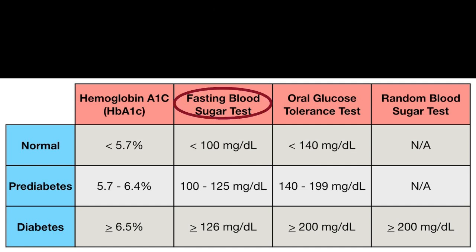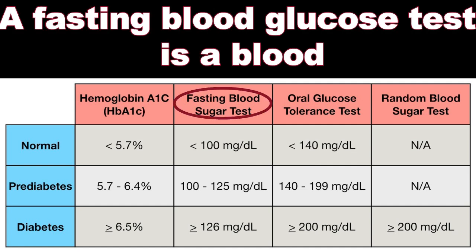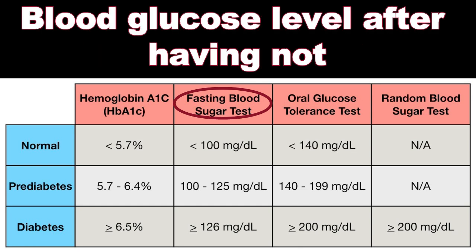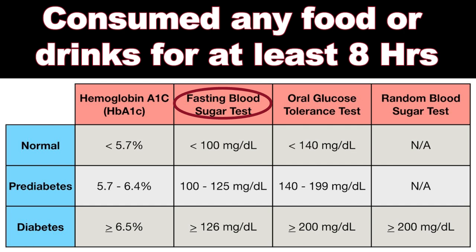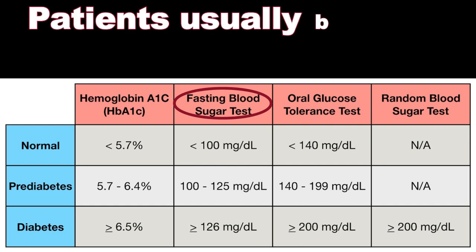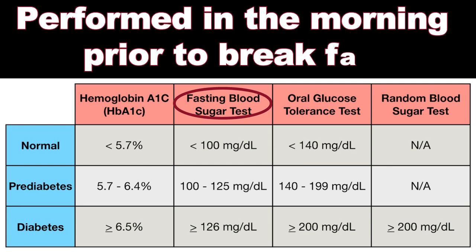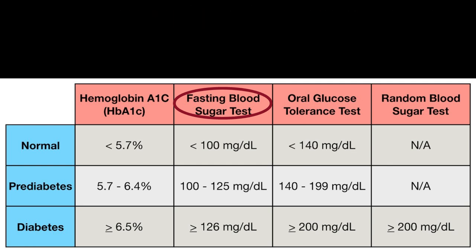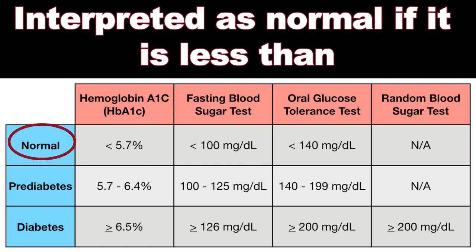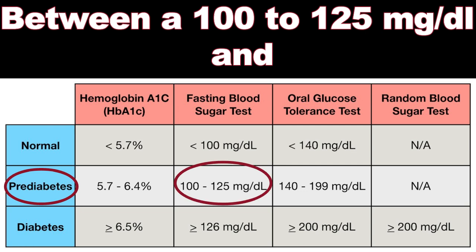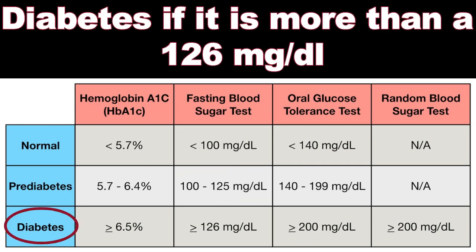A fasting blood glucose test checks blood glucose levels after not consuming any food or drinks for at least 8 hours prior to the test. Patients usually begin fasting at midnight and have blood drawn in the morning before breakfast. Results are interpreted as: normal if less than 100 mg/dL, prediabetes if between 100 to 125 mg/dL, and diabetes if more than 126 mg/dL.